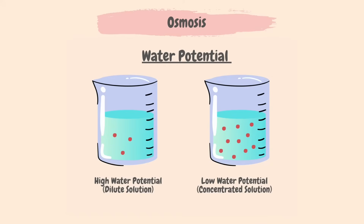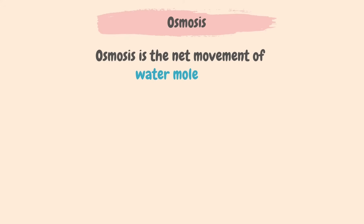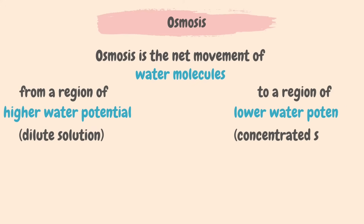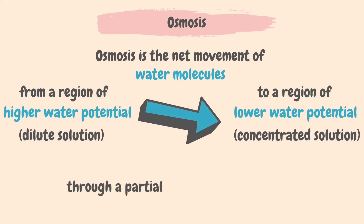For a very dilute solution, because it has a lot of water, it has a high water potential. For a very concentrated solution, because it has less water, it has a low water potential. So, osmosis is the net movement of water molecules from a region of higher water potential, or dilute solution, to a region of lower water potential, or concentrated solution, through a partially permeable membrane.